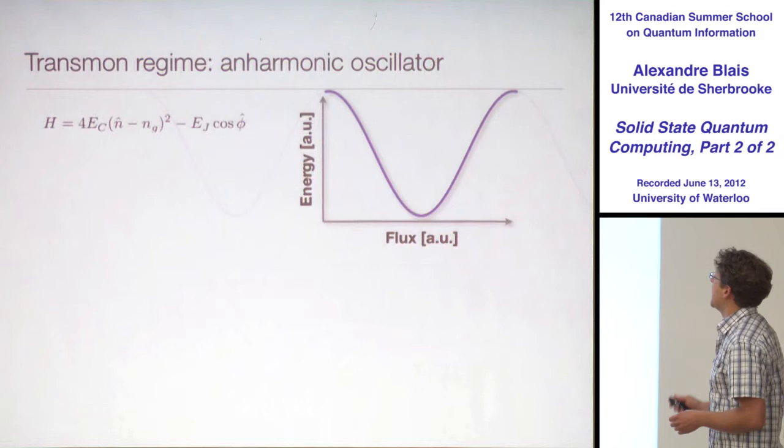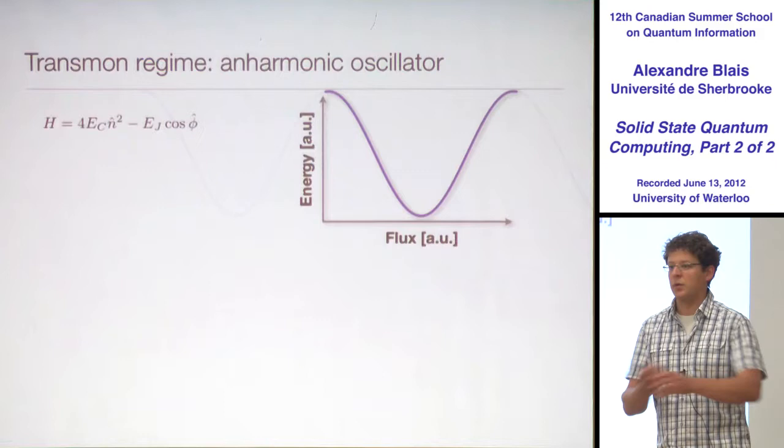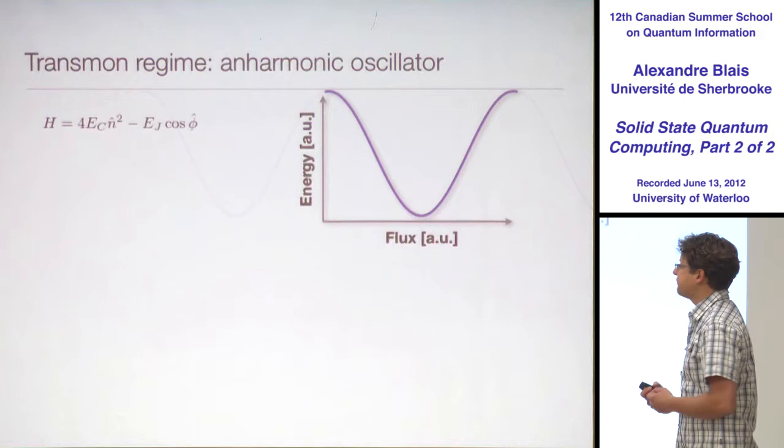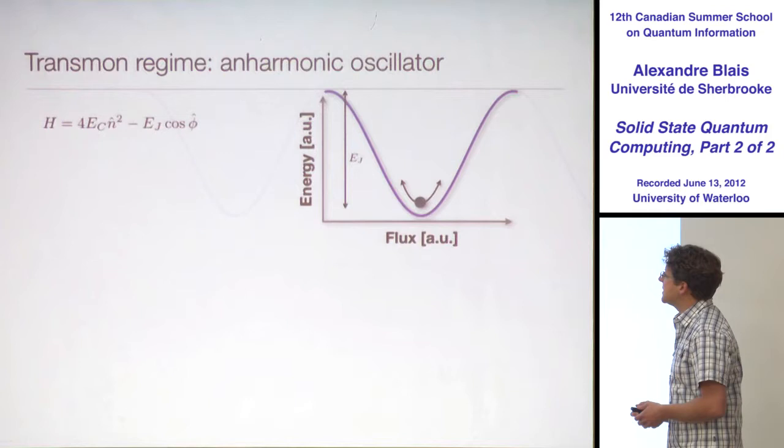So again, this is the Hamiltonian, and that's the potential that we have. I'll get rid of NG here, because we said NG doesn't matter anymore — we can be at any point, any values of NG, and it doesn't change anything. So I'll remove NG. That's our potential again.